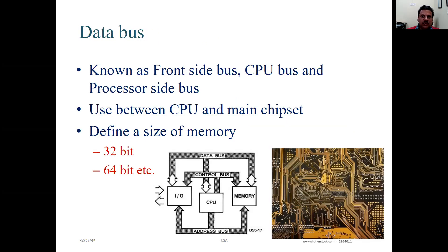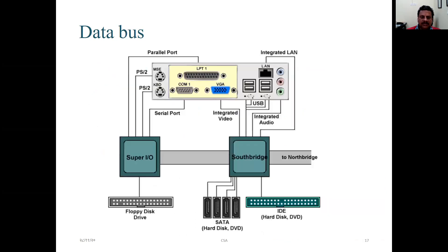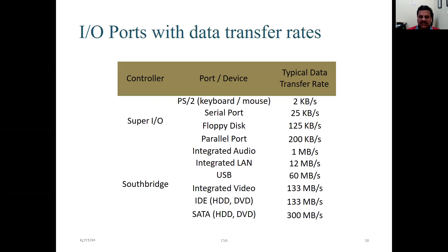Well, data bus known as front side bus, CPU bus and processor side bus. Basically, as the name says, data bus basically carries the data. It is used between CPU and main chipset, that is how to get the memory, how to work on the memory. And it has also defined a particular size that is 32 bit, 64 bit and more. Two pictures are depicted here. Then you have a pictorial form or image form of data bus. That is you can see how to recognize COM1, VGA, LPT and PS2, that is different ports, integrated LAN, south bridge and floppy drives. There is internal path of data bus. Input output with data transfer rates, that is super input output, then south bridge, USB and you can refer those things.